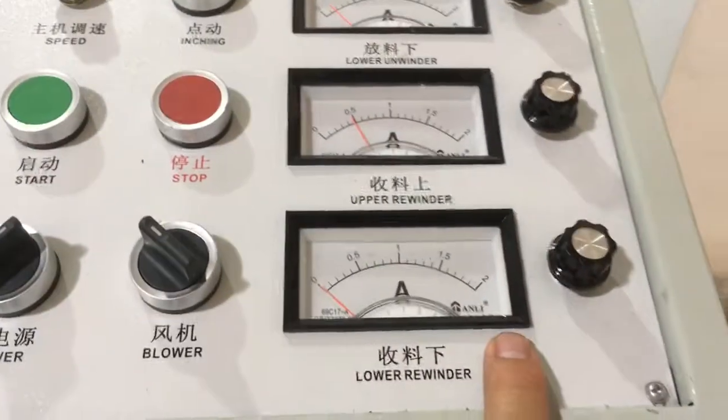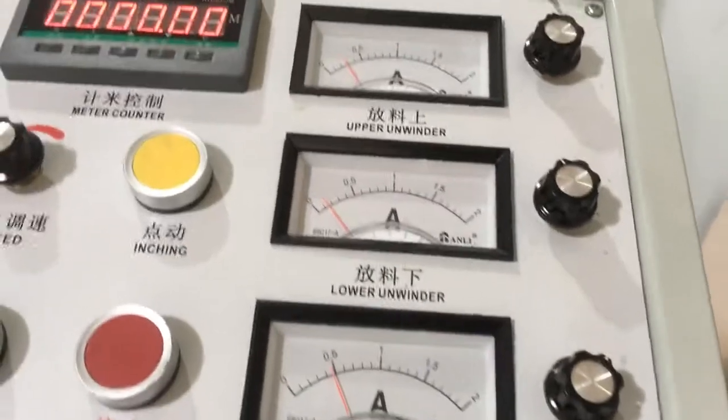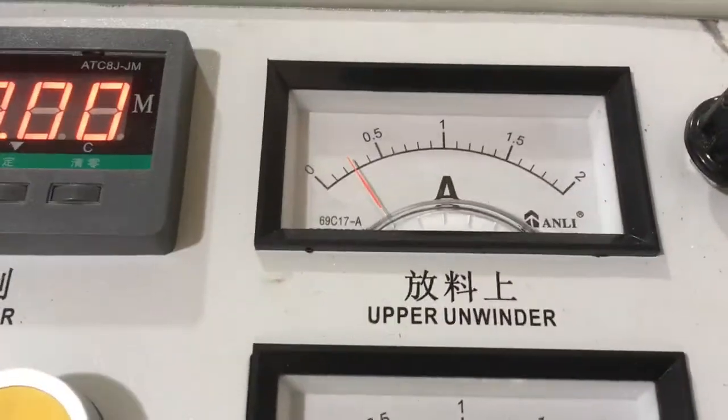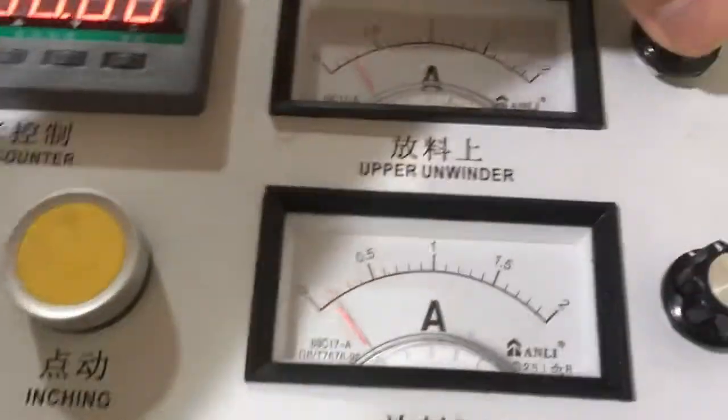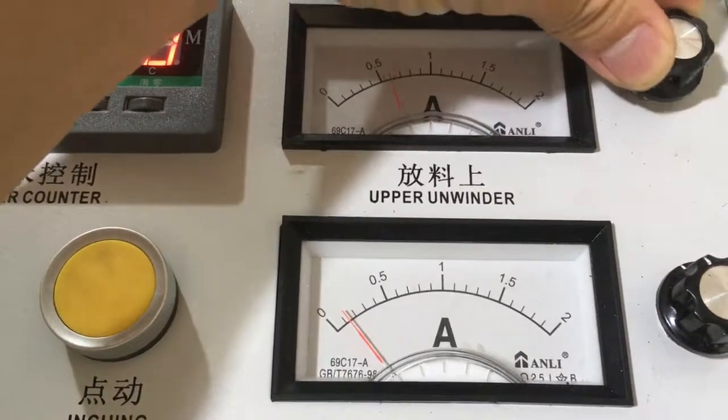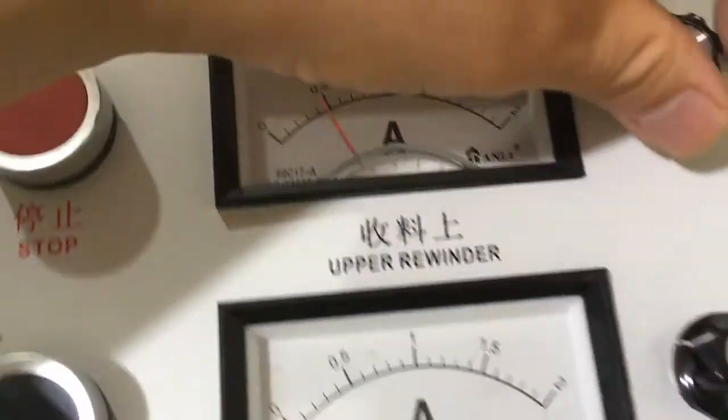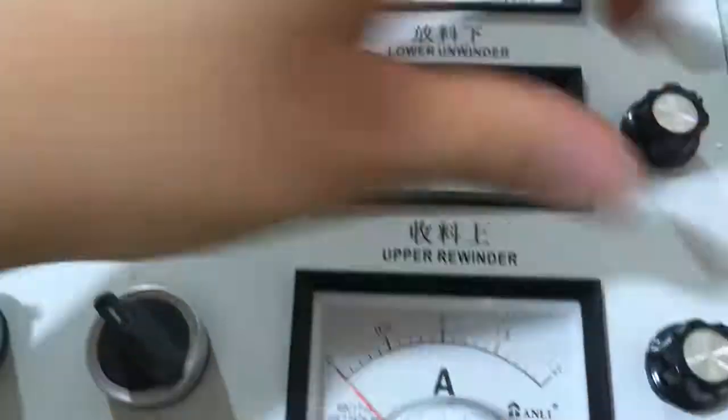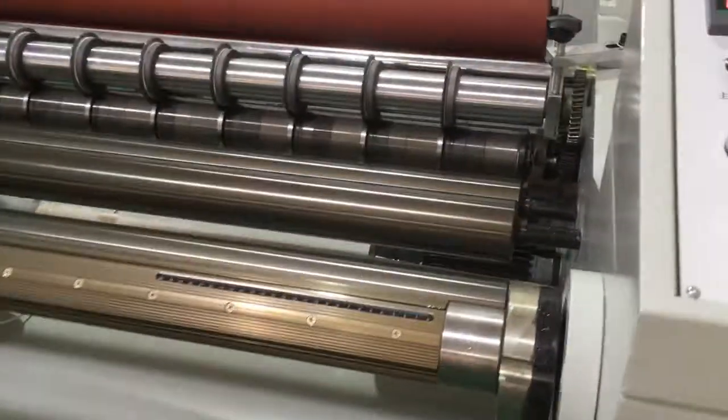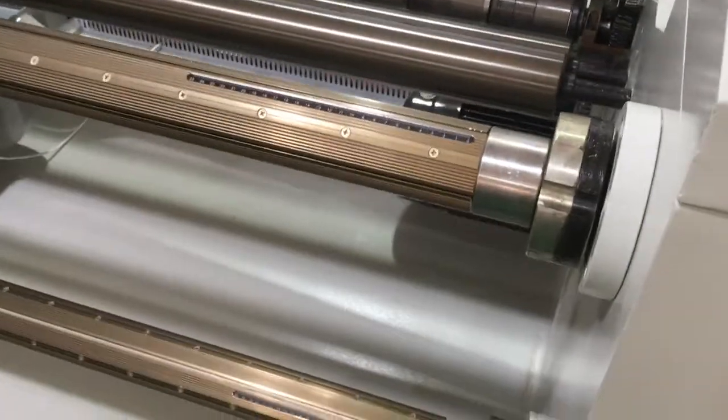There are four tension controllers. You can adjust here to increase or reduce the tension, increase or reduce, to adjust the tension of the winding shaft and the rewinding rolls.